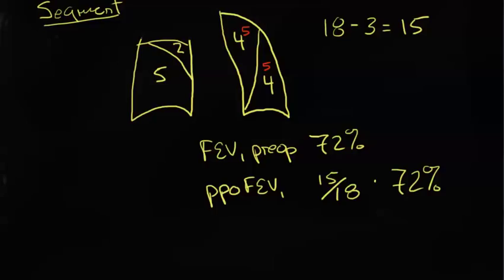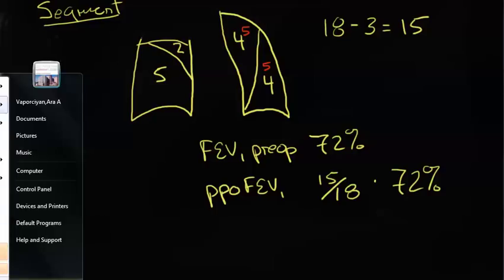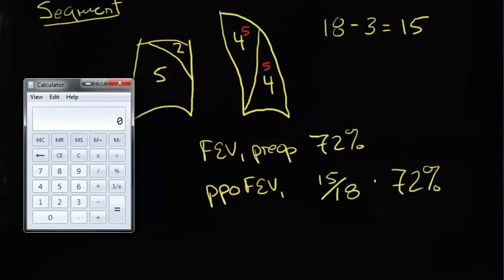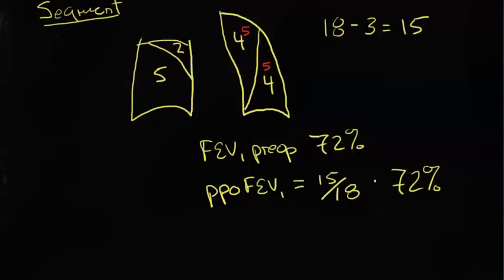then we can easily calculate his predicted postoperative FEV1 would be 15/18ths of 72%, because that's what's left. If we quickly get a calculator, 15 divided by 18 equals about 83%, and that multiplied by 72% will give you 60%.